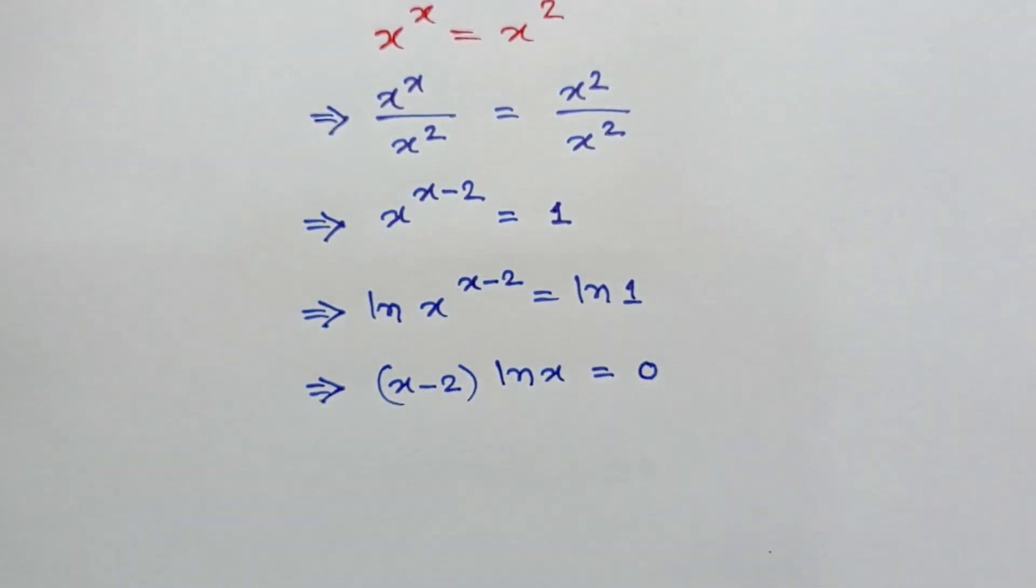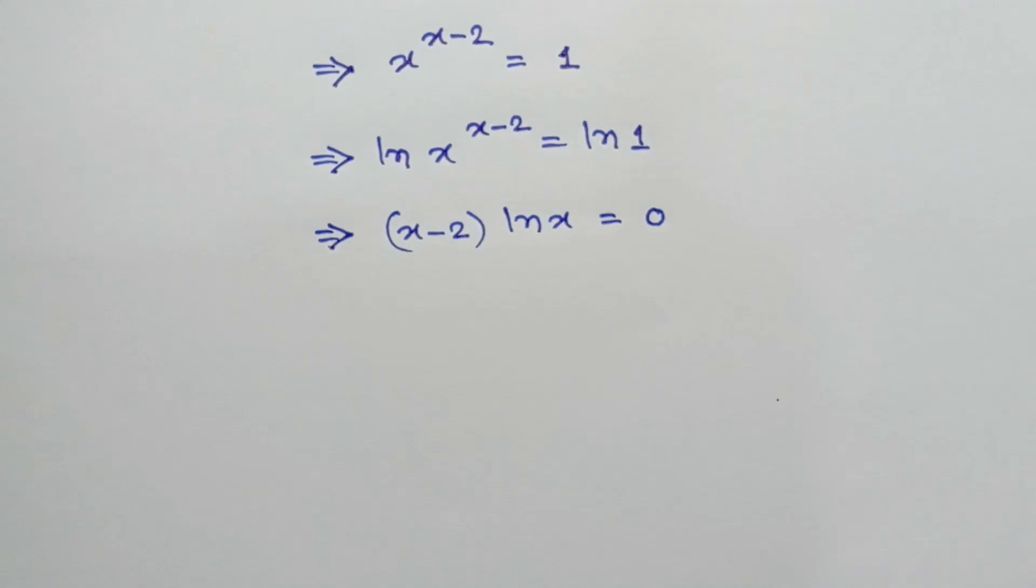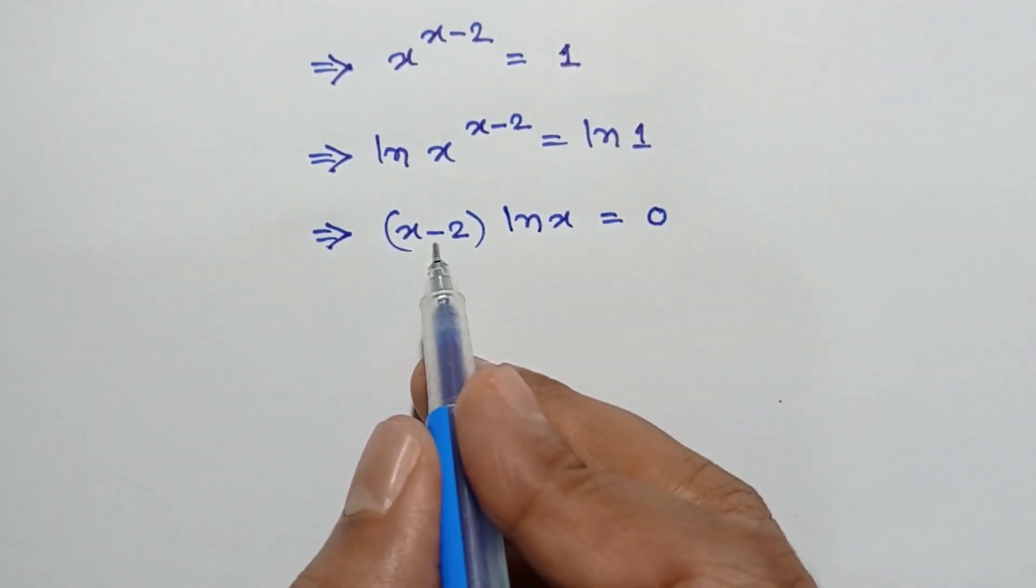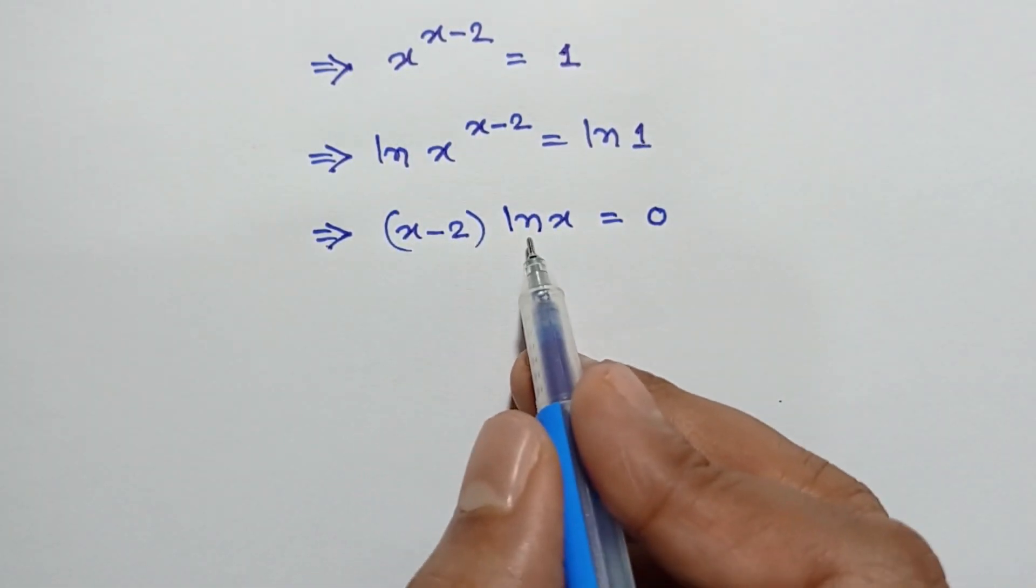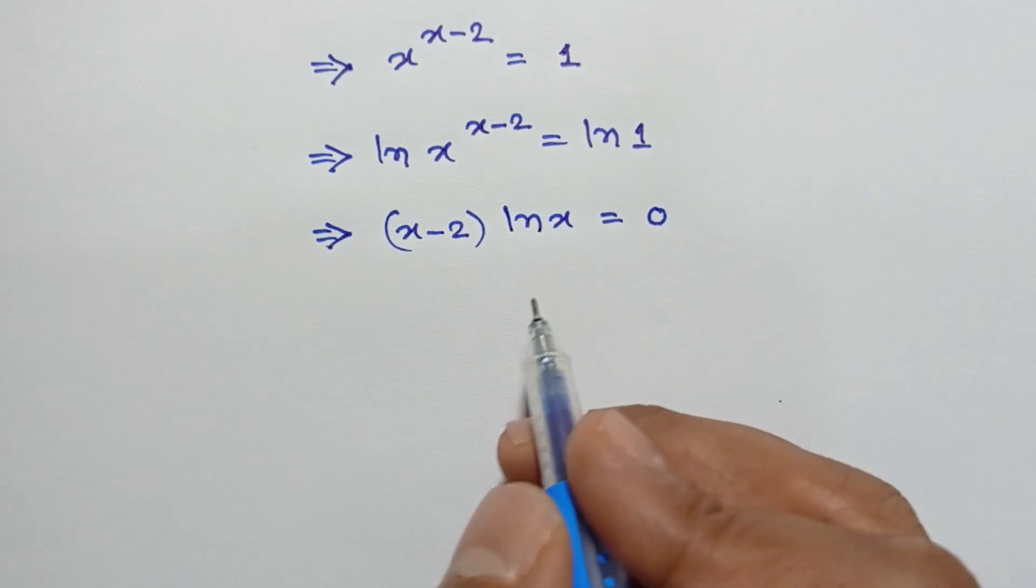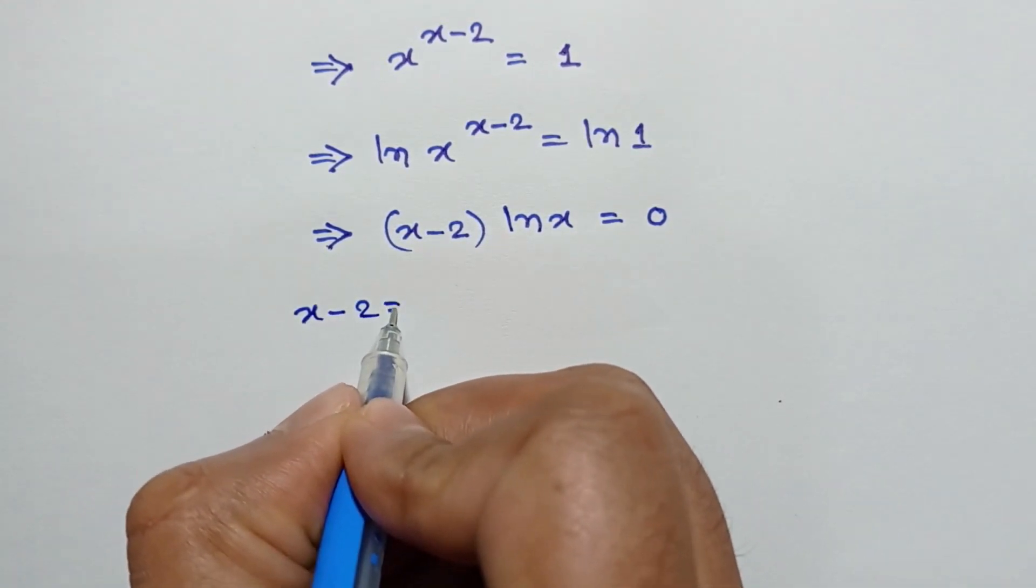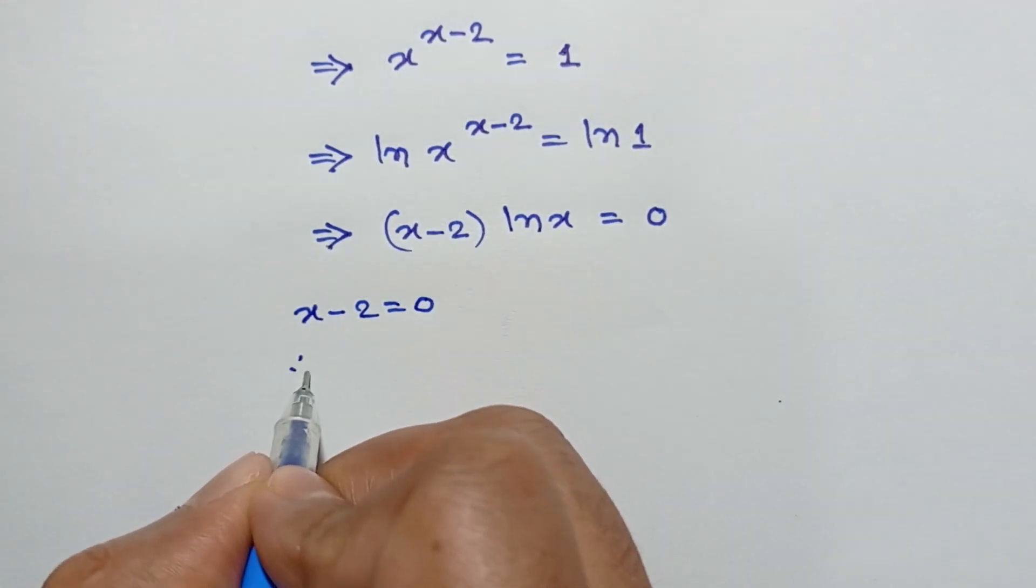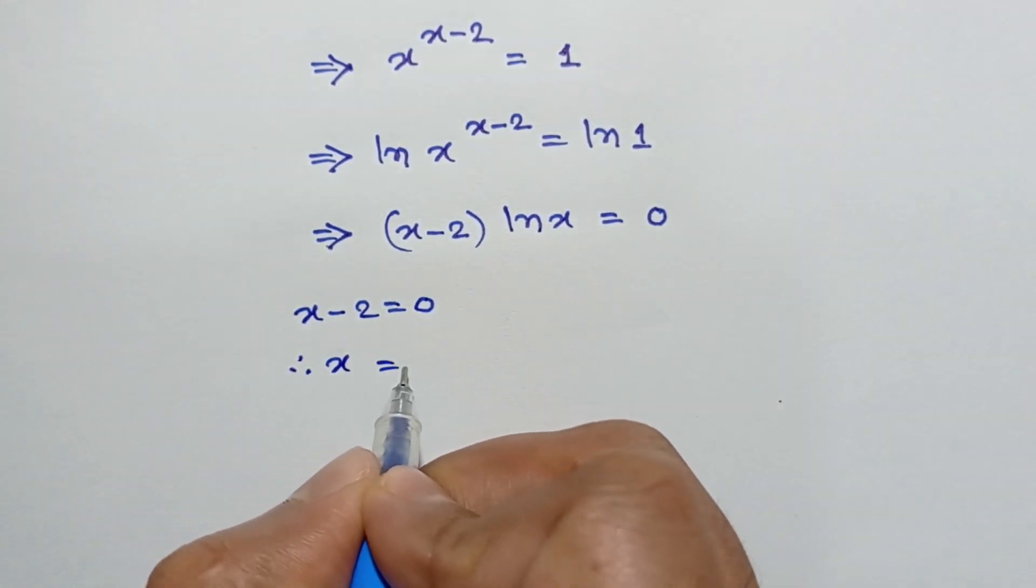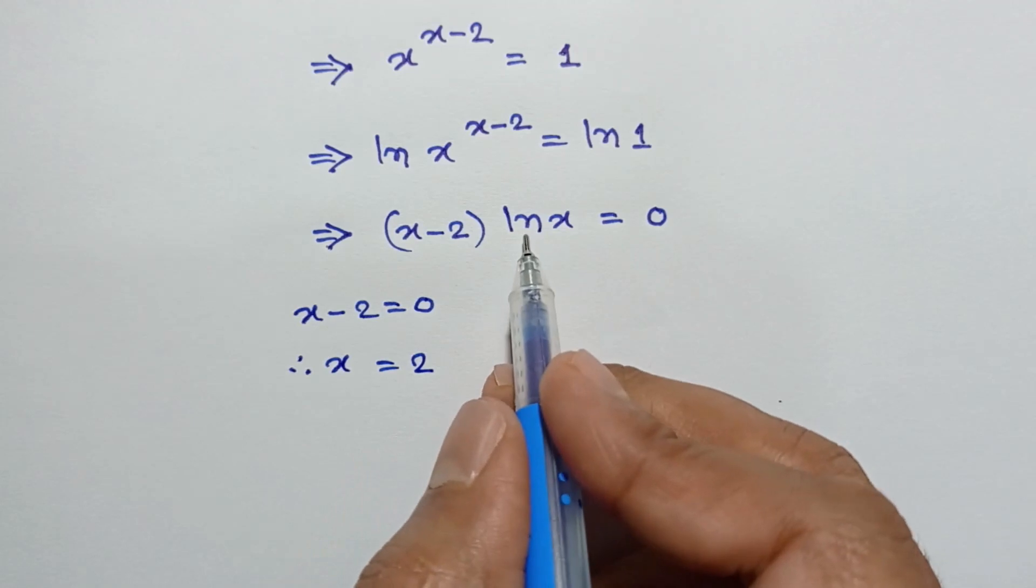Now we can write x minus 2 equals 0 or ln x equals 0. When x minus 2 equals 0, then the value of x equals 2.